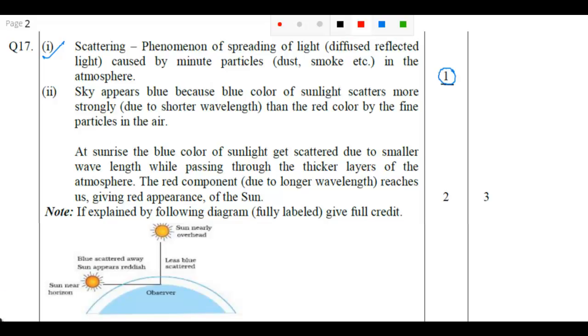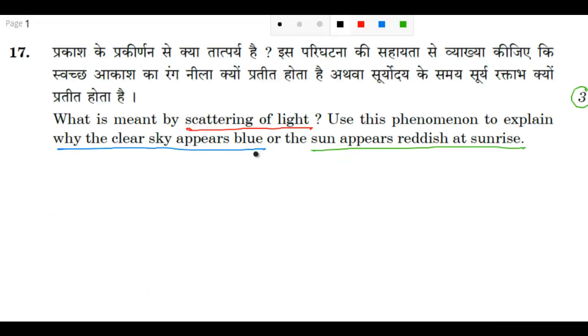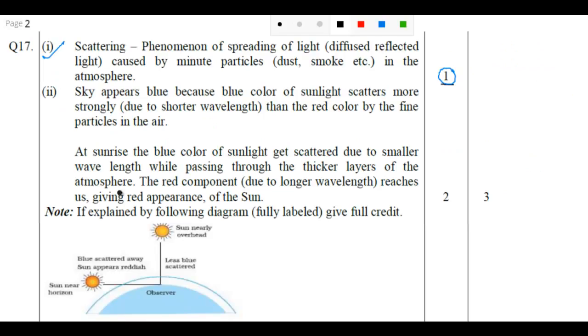And if you see the third part of the question, why sun appears reddish at sunrise, at sunrise the blue color of sunlight gets scattered due to smaller wavelength while passing through the thickest layer of the atmosphere. The red component, due to longer wavelength, reaches us because the wavelength of red light is maximum. And if it is maximum, the deviation in that case will be minimum and that will give you the red appearance of the sun.